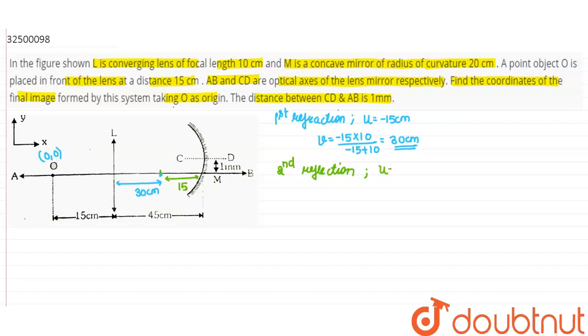Similarly, we will find it. Minus 15 into 10, minus 15 plus 10. The radius of curvature is 20, so focal length is 10 cm. This will be minus 30 cm.